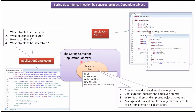The Spring container reads this Spring configuration file and creates the Address object and Employee object. It configures the Address object and the Employee object, wires the Address object with the Employee object, and manages the complete lifecycle of the Address and Employee objects.